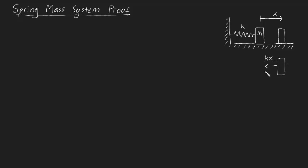So that's a force in the x direction. We could include friction, but we're going to assume that this floor is frictionless. Now let's apply F equals ma in the x direction. We know that the sum of forces acting on a body, in this case in the x direction, is equal to your mass times your acceleration in the x direction.